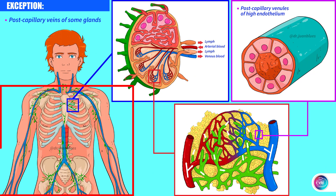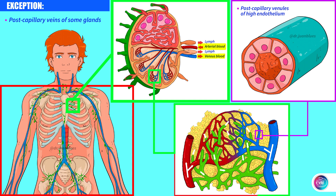Here we have the lymphatic system drawn in green. Let's enlarge a lymph node. This is where arterial blood comes in and venous blood comes out. In the area where capillary exchange takes place, blood passes through the capillary and empties into the veins. In some of these very small veins called venules, the epithelia is also simple — a single layer — but not flat; rather cube-shaped. These venules, which are the exception, are known as high endothelial venules.